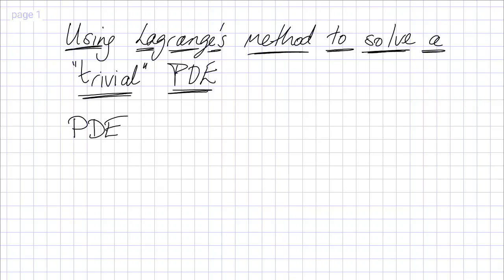So the PDE we're going to consider is this fellow, ∂u/∂x = 0. And of course we could just solve that simply by integrating with respect to x whilst holding y constant and then we'd find the solution u(x,y) is some arbitrary function of y.